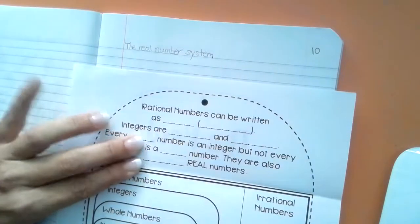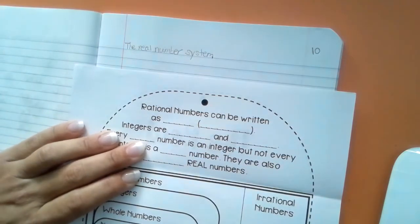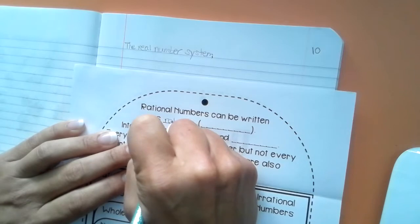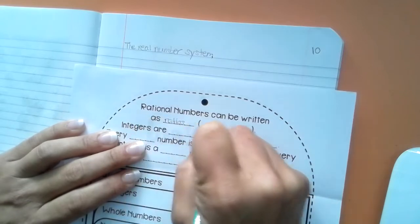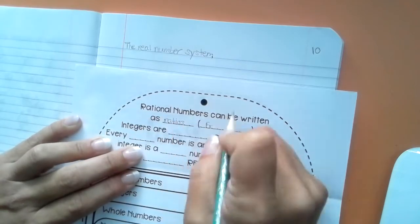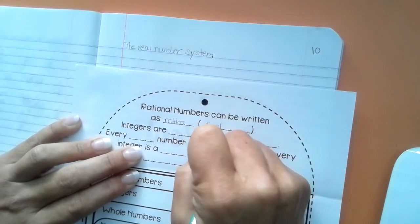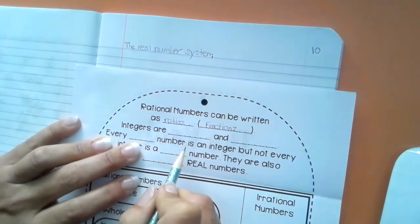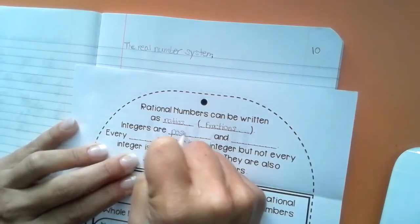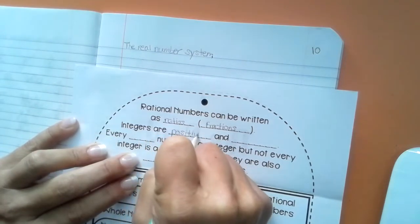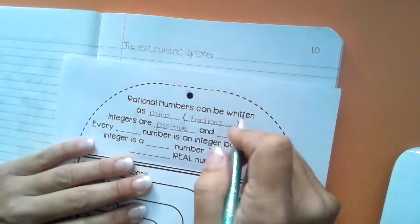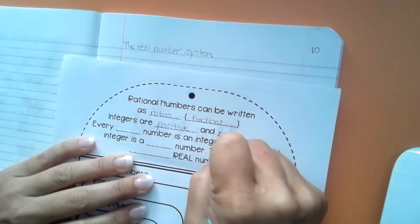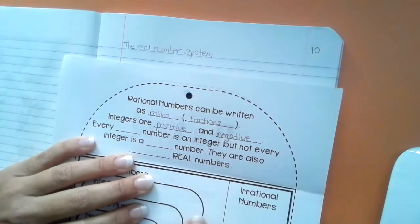Okay, so rational numbers can be written as ratios and we know ratios as fractions. Integers are positive and negative.